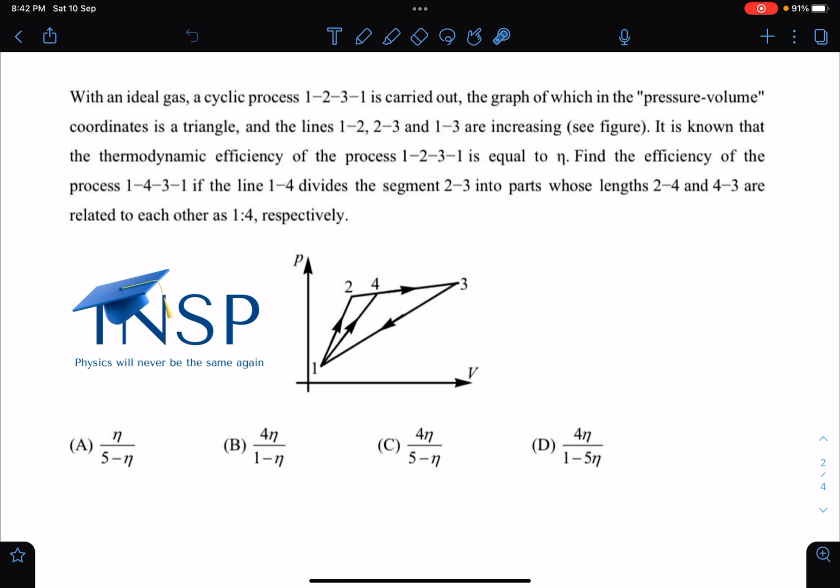With an ideal gas, a cyclic process 1-2-3-1 is carried out, the graph of which in pressure-volume coordinates is a triangle, and the lines 1-2, 2-3, and 1-3 are increasing. Something like this.